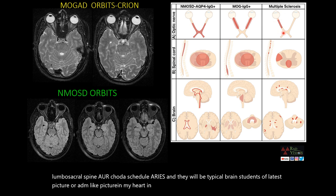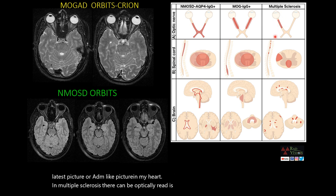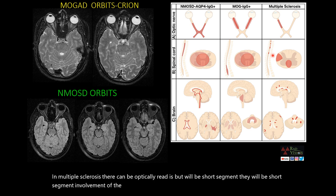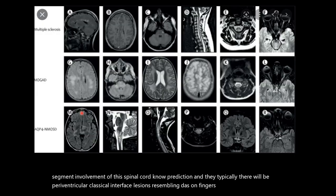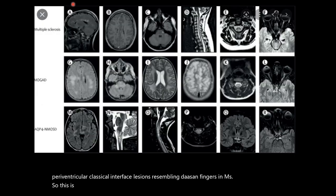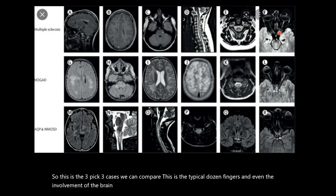In multiple sclerosis there can be optic neuritis, but it is short segment. There is short segment involvement of the spinal cord with no predilection, and typically there are periventricular calloseptal interface lesions resembling Dawson's fingers in MS. Comparing the three cases: MS shows Dawson's fingers, brainstem involvement, and optic neuritis.